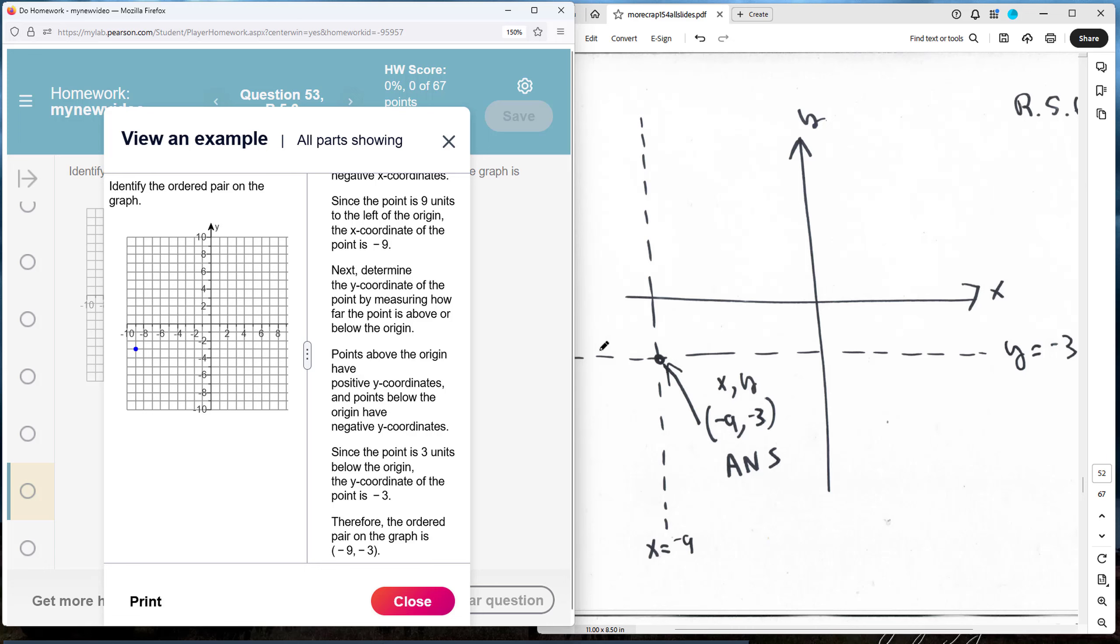Then I drew a line that was horizontal to it and drew that through it and this particular line represents all the numbers where the y coordinate is a negative 3.